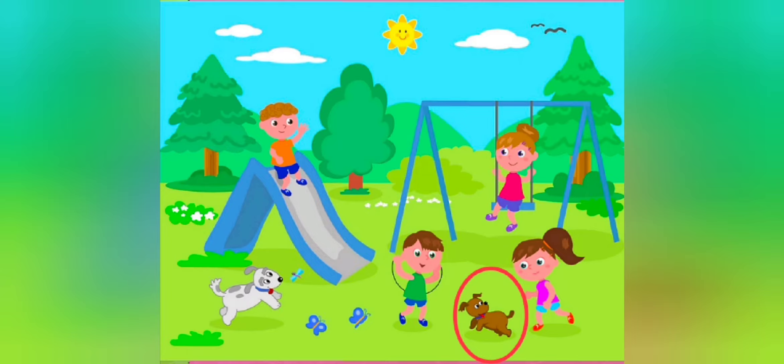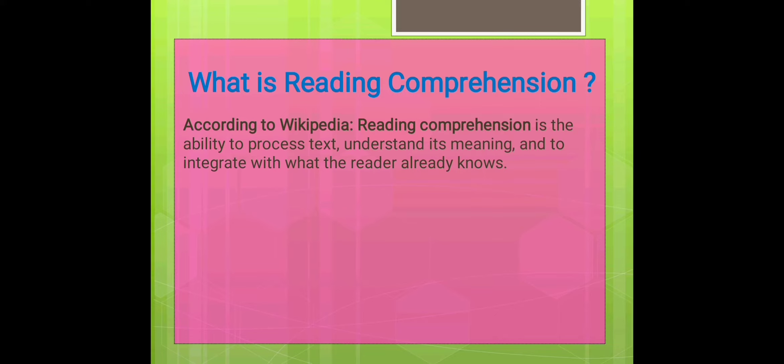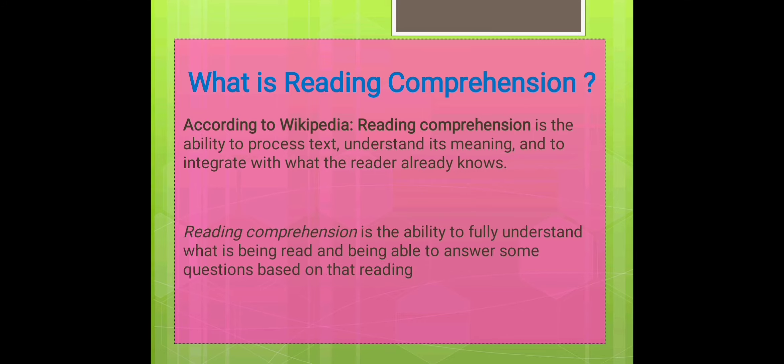After picture comprehension, let us move to another type of comprehension, that is reading comprehension. The question is, what is reading comprehension? According to Wikipedia, reading comprehension is the ability to process text, understand its meaning and to integrate with what the reader already knows. In other words, we can say, reading comprehension is the ability to fully understand what is being read and being able to answer some questions based on that reading.